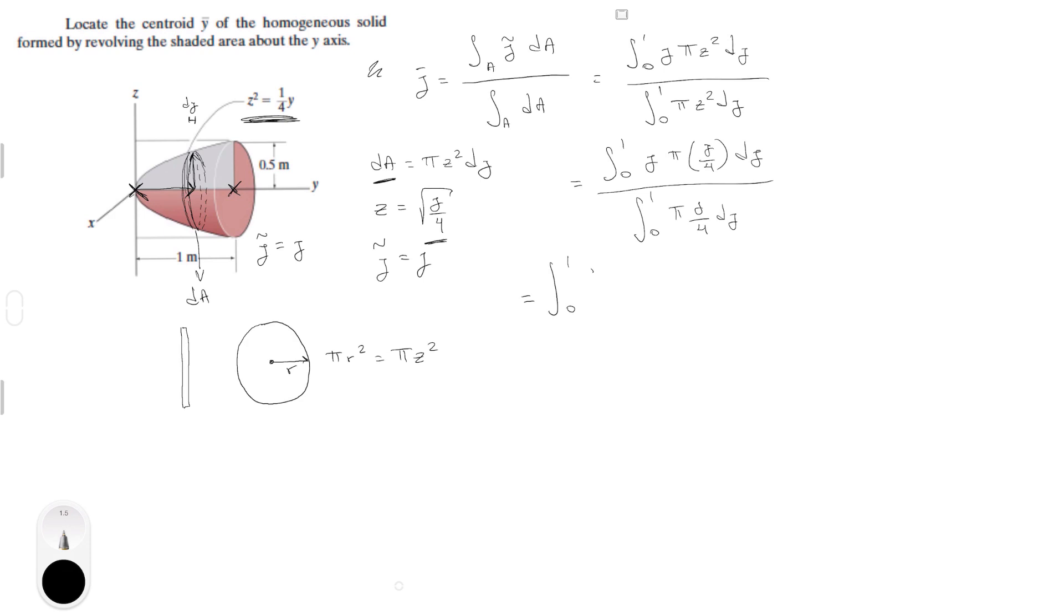This is equal to the integral of 0 to 1, and now we can start solving the integral which is, let me multiply it a little more, Y squared pi over 4 dY all over integral from 0 to 1 of pi Y over 4 dY. This is equal to Y cubed times pi over 12 all over Y squared times pi over 8, from 0 to 1.